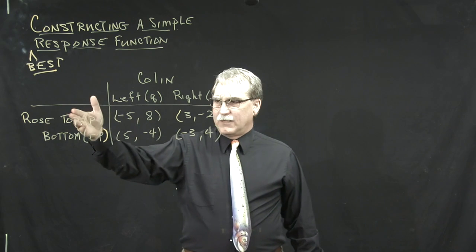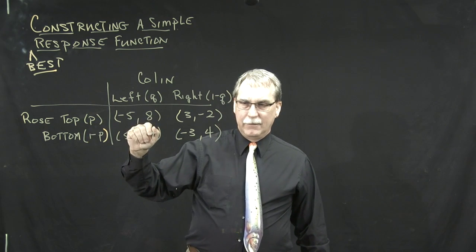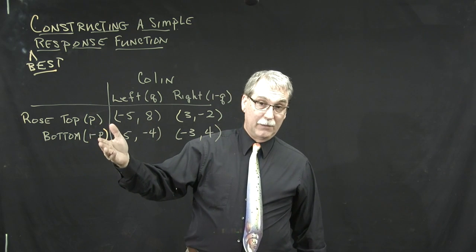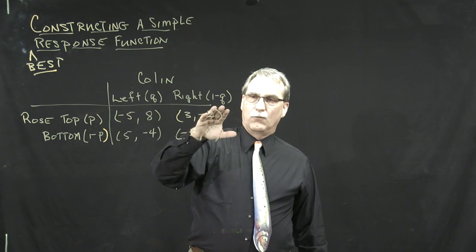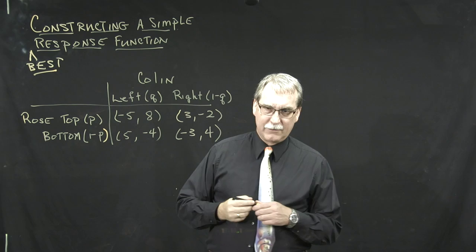Rose plays top with probability P and therefore plays bottom with probability 1 minus P. Colin plays top with probability Q and right with probability 1 minus Q.